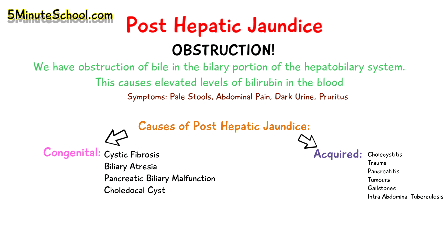To summarize: we have pre-hepatic jaundice, mainly caused by hemolysis — the splitting of red blood cells because they are not strong enough. We have hepatic jaundice, which affects the introduction of bilirubin to the liver, the conversion to conjugated bilirubin, and the excretion. And we have post-hepatic jaundice, where there is some kind of obstruction in the biliary portion of the hepatobiliary system.